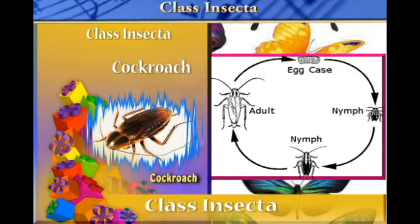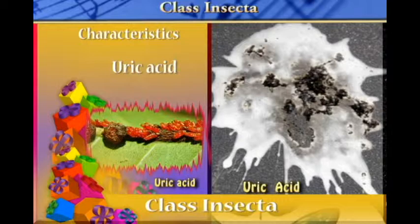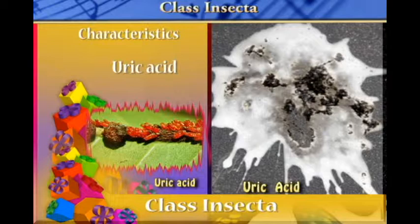Organisms in class Insecta excrete nitrogenous wastes in the form of uric acid, because uric acid requires less water and therefore helps them conserve water in their bodies.